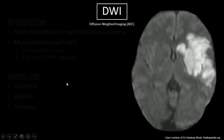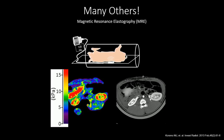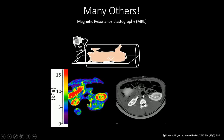Comparing DWI to ADC: bright on DWI, dark on ADC. There are a lot of other sequences we didn't go over — MRA, angiography, bold imaging, and many experimental sequences. I hope this talk was somewhat helpful to you, and I hope you have a fantastic day.